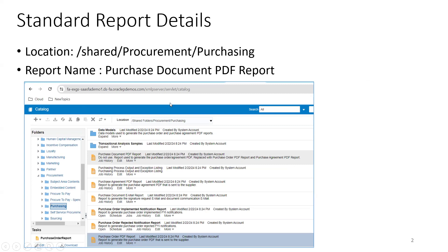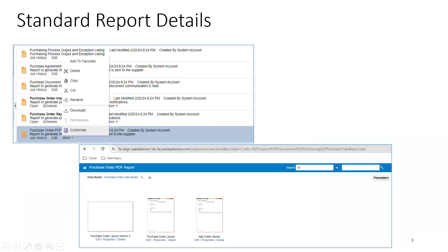Make sure that you navigate to the catalog via the XMLP server, not Analytics. You have to navigate to this particular BI report via the XMLP server. Once you find your PO PDF report, click on More, then click on Customize.